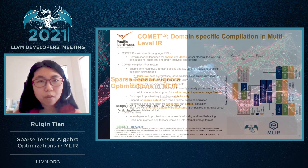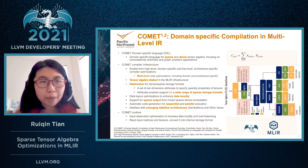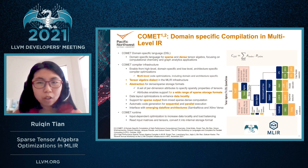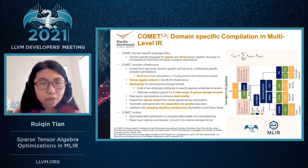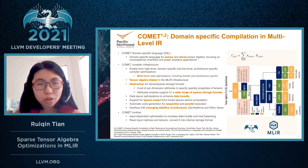Our work is based on the COMIT compiler, which is a domain-specific compilation framework for MLIR. COMIT contains a domain-specific language for sparse and dense tensor algebra computations, focusing on computational chemistry and graph analytics applications. COMIT enables high-level domain-specific and low-level architecture-specific compilation optimizations, and contains a Tensor Algebra dialect in the MLIR infrastructure, providing abstractions for dense and sparse storage formats — a set of per-dimensional attributes to specify the sparsity properties of tensors, enabling support for a wide range of sparse storage formats.